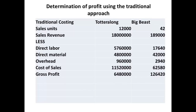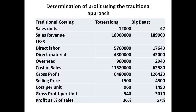The figures indicate a gross profit of $6.48 million for the moped and $1.26 million for the luxury bike. Given the cost per unit and selling price, we can determine the gross profit per unit. For the moped, each unit sold yields $540 as profit, and for the luxury bike, each unit sold yields $3,010 as profit. Determining profit as a percentage of sales, the totter-along has a return of 36% and the luxury bike a return of 67%. It would appear from these figures that increasing the production of the big beast luxury bike and decreasing production of the moped is a good idea.